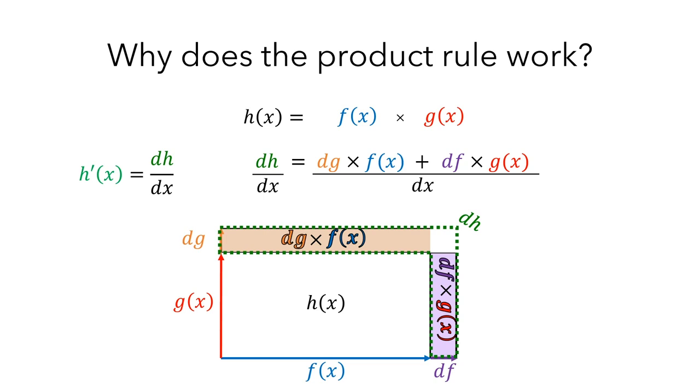First, remember that a fraction with a sum in the numerator can be rewritten as a sum of two fractions with a common denominator. And then, when we have a product in the numerator of a fraction, we can rewrite it as a product of two fractions, where the second fraction has a denominator of 1. And then we can simplify this a bit by rewriting the terms without the denominator of 1.